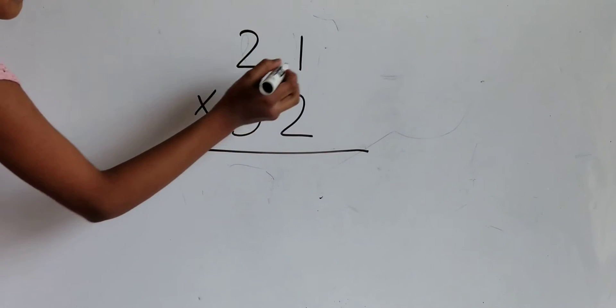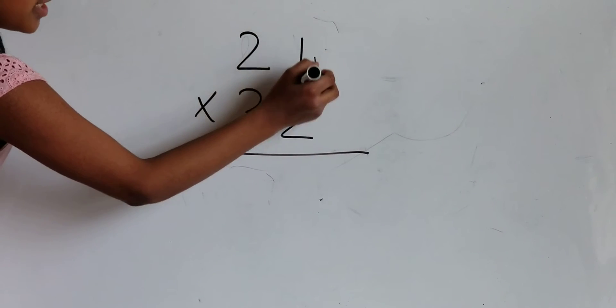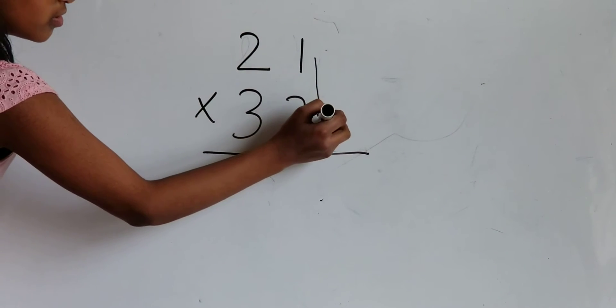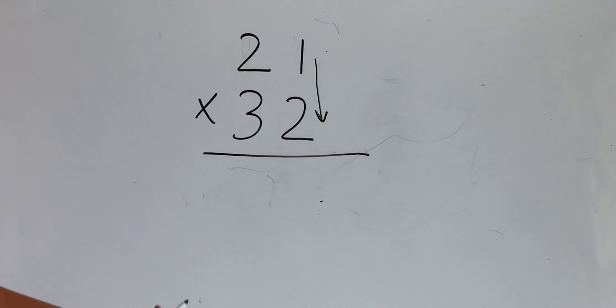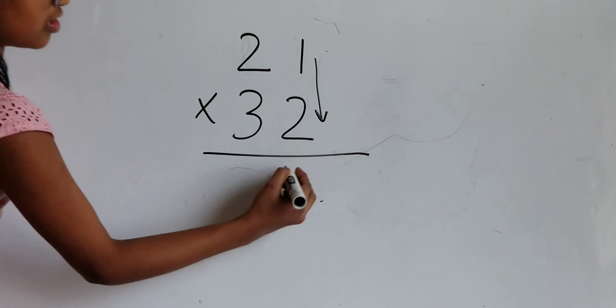First, multiply 1 times 2. 1 times 2 is 2.